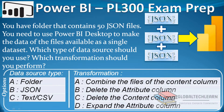The first question asks what data source type we should select, and there we have three options: Folder, JSON, and Text or CSV file. The next question asks what transformation we have to apply, and under that we have four options: Option A - combine the files of the content column, Option B - delete the attribute column, Option C - delete the content column, Option D - expand the attribute column. In this question we need to import multiple JSON files and combine all the file data in a single table.